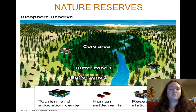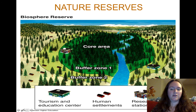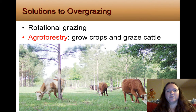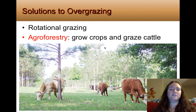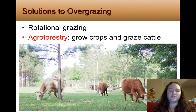We can establish nature preserves, essentially designating areas where nothing can be done, with buffer zones on the outside where limited activities like hunting might be allowed. Other solutions to overgrazing include rotating cattle — moving them from one area to another each season and letting the previous area grow back. We can also practice agroforestry, growing crops and grazing cattle in the same area, like having Christmas trees alongside sheep or goats, so you're not overgrazing or depleting resources.